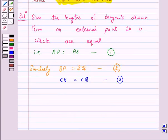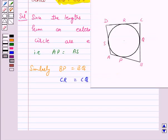Again, the lengths of two tangents drawn from D, DS and DR, so their lengths are also equal. So we have DR is equal to DS. Let us give this as number 4.